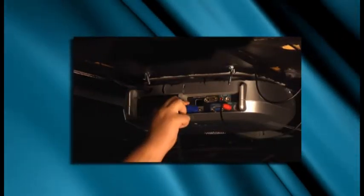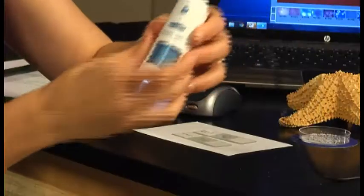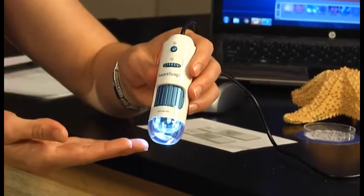You can hook the SmartScope right up to your own computer and then project the images throughout the classroom, whether that's on a screen or an interactive whiteboard. The SmartScope is extremely easy to use. As you can see, there are three controls on the front.